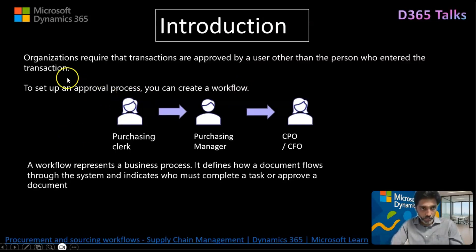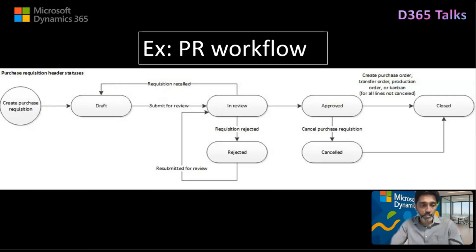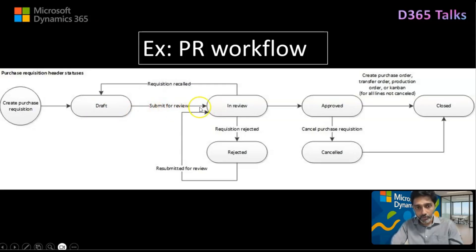Here's a simple example taken from the MS Learn documentation for purchase requisitions. Purchase requisitions are typically raised for direct or indirect material purchases. When you create a purchase requisition, by default the document takes the status of Draft — this is the approval status when the document is first created. Once you have added the purchase requisition lines, the purchase requisition can be submitted for approval. When submitted for review, the document takes the In Review status.